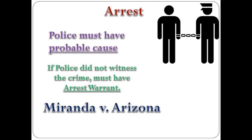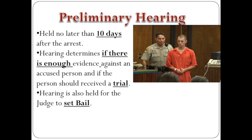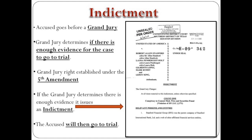In order to even be arrested, police must have probable cause. If police do not witness the crime, they must have an arrest warrant. Anyone accused of a crime must have a preliminary hearing within 10 days of their arrest. This preliminary hearing determines if there's enough evidence against the accused person to actually have a trial. The hearing is also held for the judge to set bail if that's necessary. In the indictment phase, the accused goes before a grand jury, and the grand jury determines if there's enough evidence for the case to go to trial. The grand jury's right was established under the Fifth Amendment.